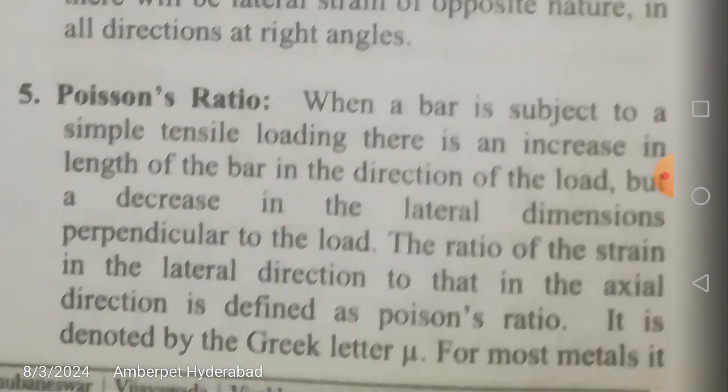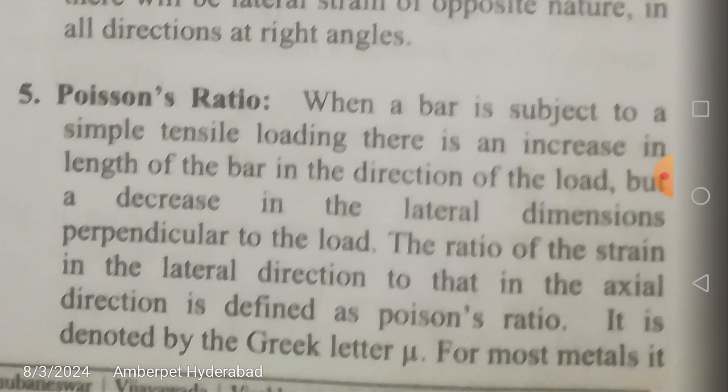Poisson's ratio: when a bar is subjected to simple tensile loading, there is an increase in length in the direction of the load but a decrease in the lateral dimension — that is, the diameter. For a round bar of diameter d and length l, l increases while d decreases. The ratio of the strain in the lateral direction to that in the axial direction is defined as Poisson's ratio.